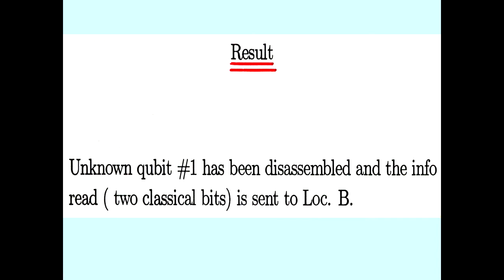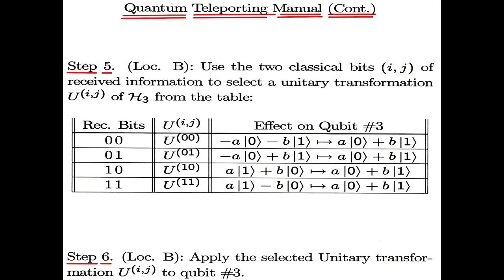Based on this information, the person at location B, I guess I should call him Bob, Bob reads the information and from a table chooses a unitary transformation, which if the bits received are, for instance, zero one, it tells him that what he has now in hand is a state, a qubit, and the state minus A ket zero plus minus B ket one. So he applies a unitary transformation to put it into the original state. If he receives one one as the received information, he knows the state is in the form so indicated as shown by my cursor. And he applies a unitary transformation to put it into the original state.